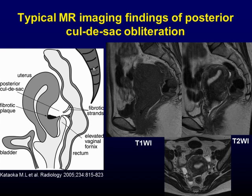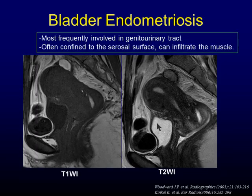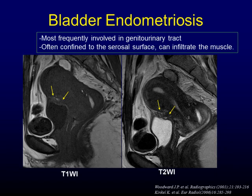The schematic drawing shows the typical MR imaging findings of Douglas obliteration. The characteristic findings are a retroverted uterus, fibrous strands between the uterus and rectum, an elevated vaginal fornix, and a fibrotic plaque on the serosal surface of the uterus. Regarding the bladder, it is the most frequently involved organ in the urinary tract. On MRI, high signal spots on the surface of the bladder wall are found on T1-weighted image. On T2-weighted image, bladder wall thickening with irregular heterogeneous signal intensity is found. These implants often confined to the serosal surface but can infiltrate the muscle and appear as mural masses projecting into the bladder lumen.